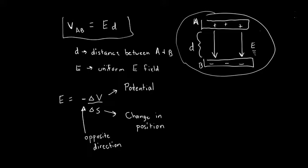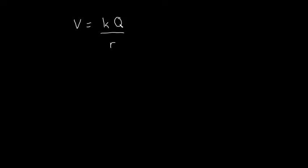Two good definitions: V equals Ed for potential between a couple of plates, and more generally E equals negative change in potential divided by change in position. You can also create an electric potential from a single point charge: V equals K times Q divided by R, where K is 8.99 times 10 to the 9, Q is the charge, and R is how far you are away from that charge. Every charge creates an electric potential at every single point.